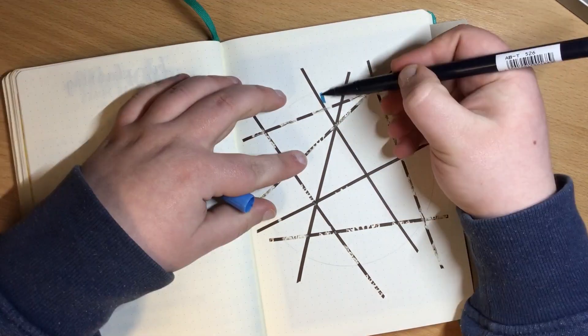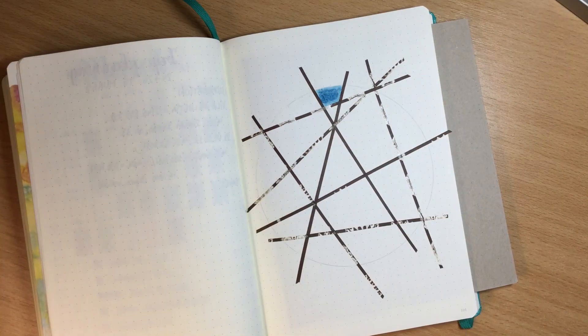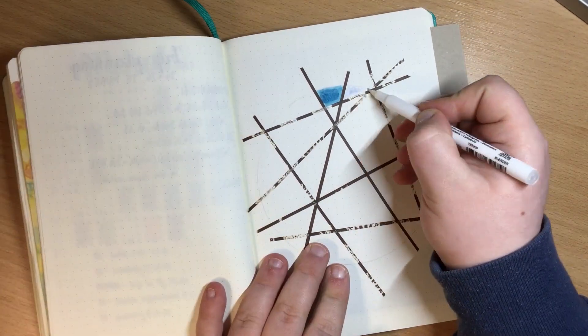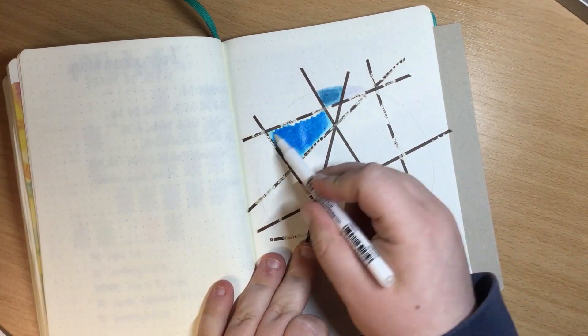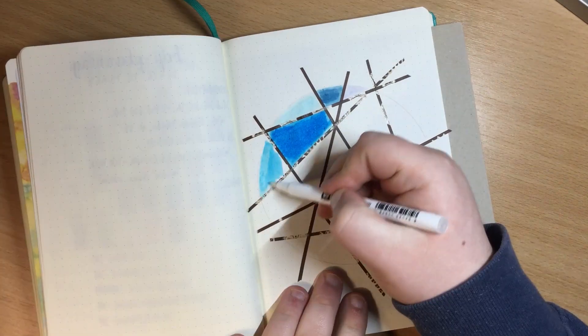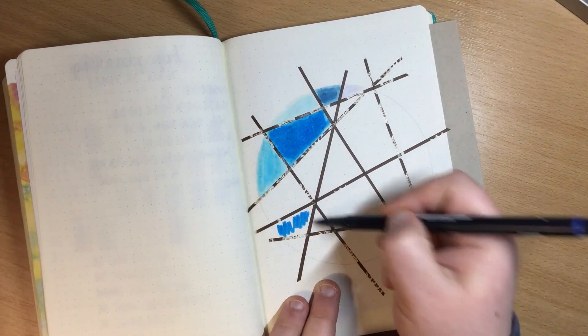I'm using a few Tombow ABT dual brush pens to color it and to give it a watercolored look and I'm blending it out with my Koi blender pen, since I don't have a Tombow blender pen yet.